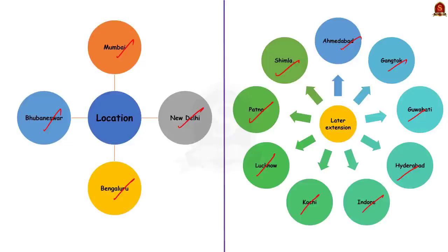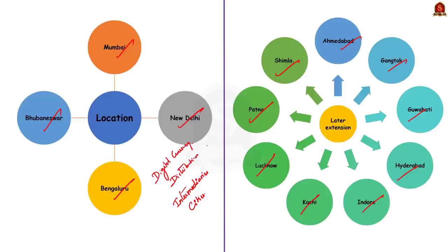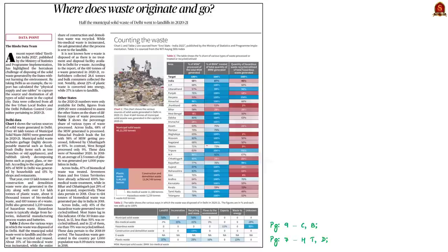These are the details about intermediaries and cities where the pilot program is going to be commenced. In this discussion, we saw about the digital currency, its distribution mechanism, transaction methods, significance, and the intermediaries and places where the pilot program will begin. Let us move on to the next article discussion.